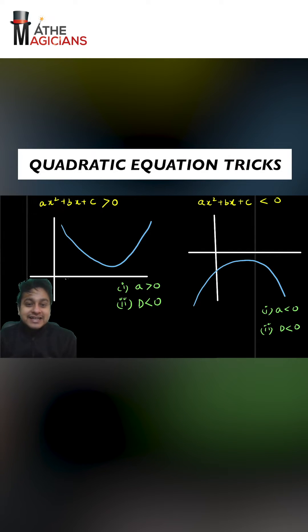Moreover, it will never cut the x axis, so its discriminant will be less than zero. As you can see over here,